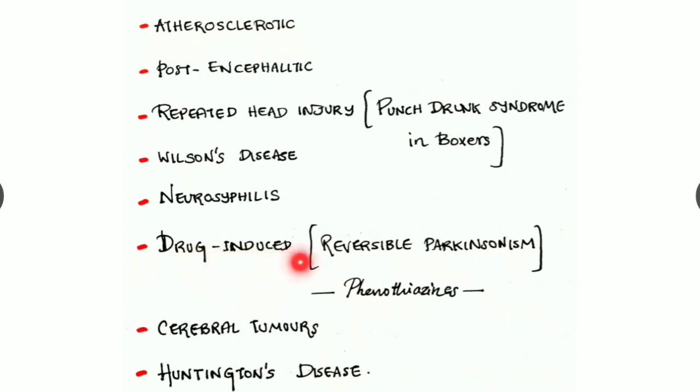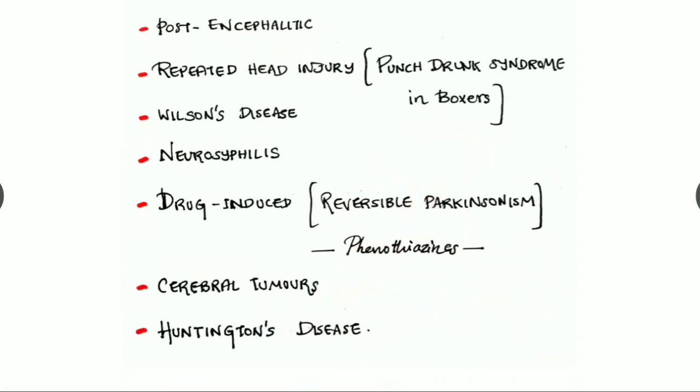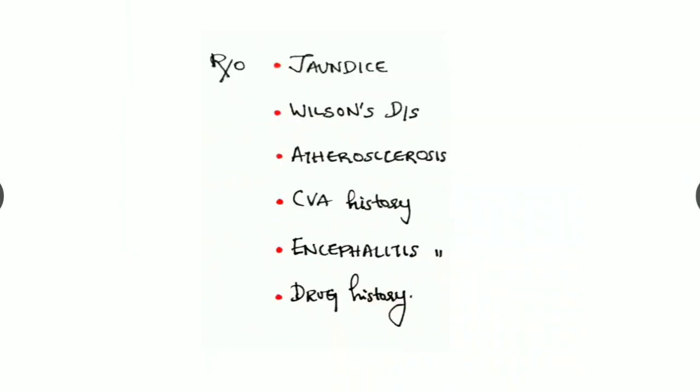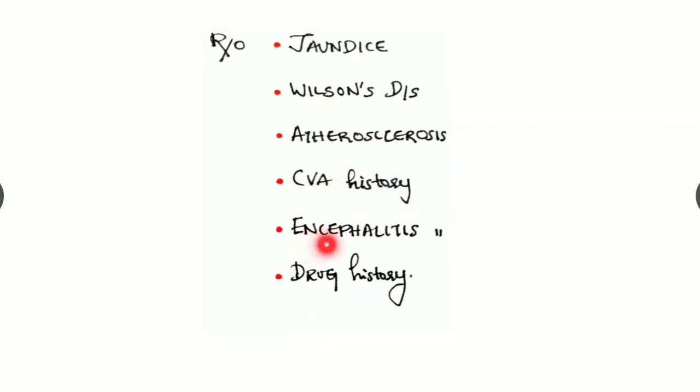The drug-induced Parkinsonism is of reversible type. Example of the drug is phenothiazines. This Parkinsonism can develop due to cerebral tumors and also by Huntington's disease. Hence, while diagnosing the case, we have to rule out jaundice history, Wilson's disease, history of atherosclerosis, cerebrovascular attack history, encephalitis history, and drug history too.